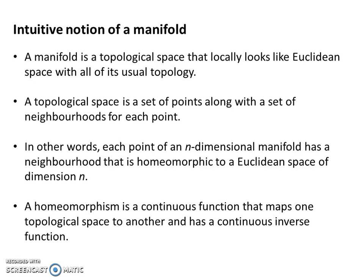Let's begin with an intuitive notion. We can think of a manifold as a topological space that locally looks like Euclidean space with all its usual associated topology. Picking any point on a manifold, around that point locally the manifold looks Euclidean. A topological space is a set of points along with a set of neighborhoods for each point. An n-dimensional manifold has a neighborhood homeomorphic to Euclidean space of dimension n, where a homeomorphism is a continuous function that maps one topological space to another and has a continuous inverse function.